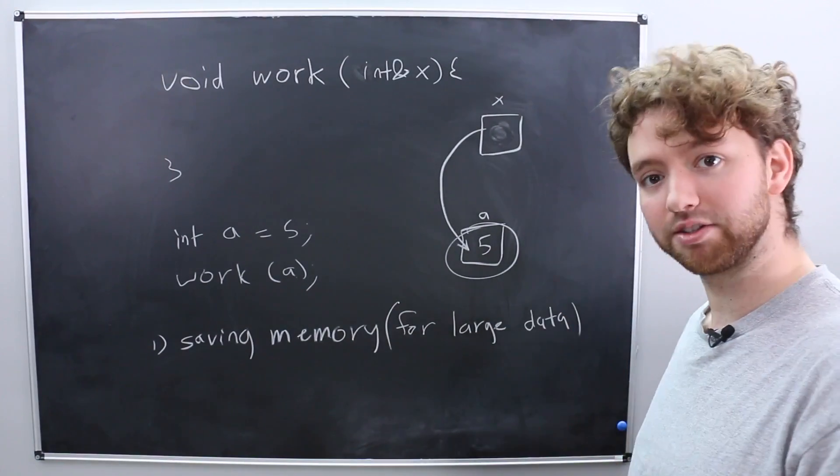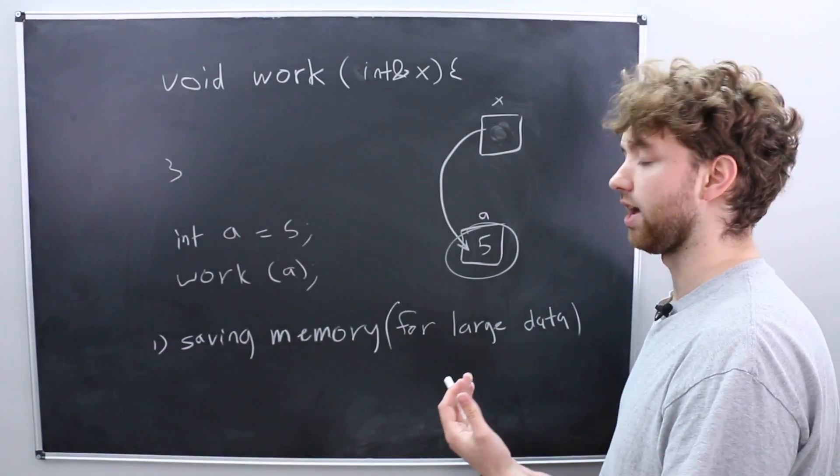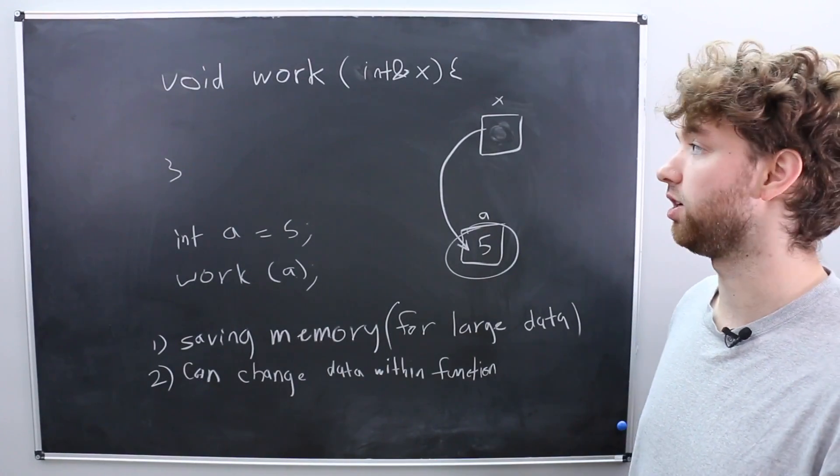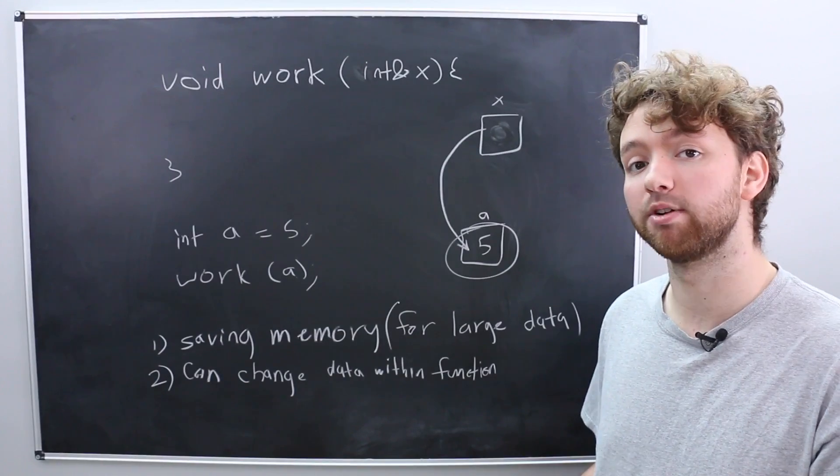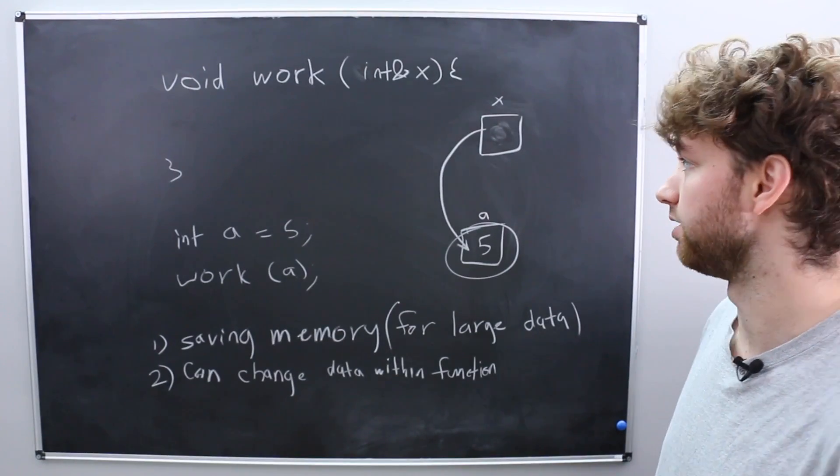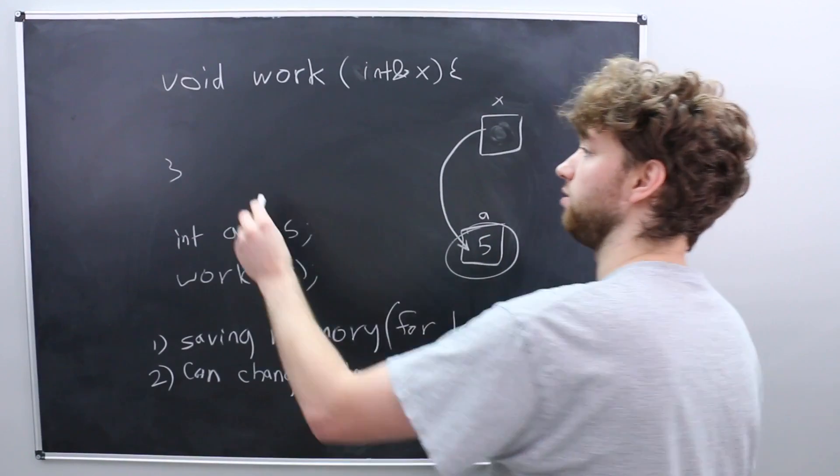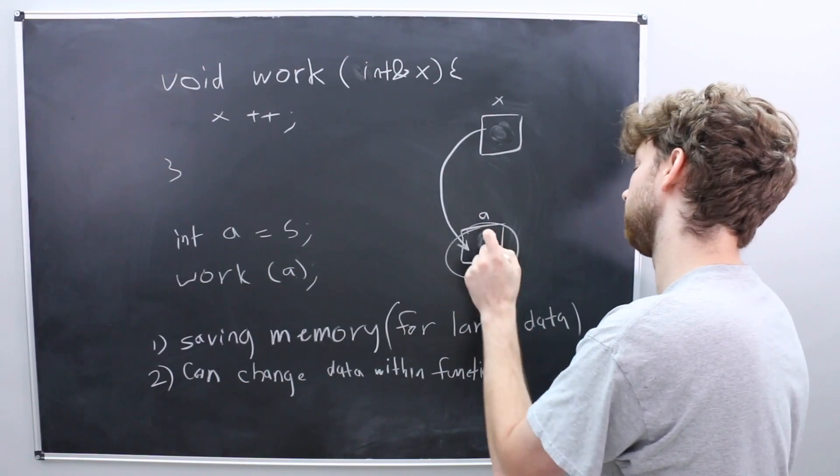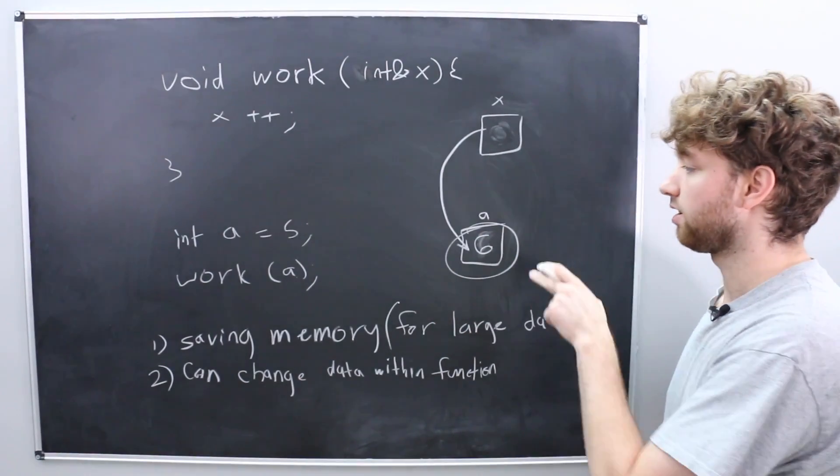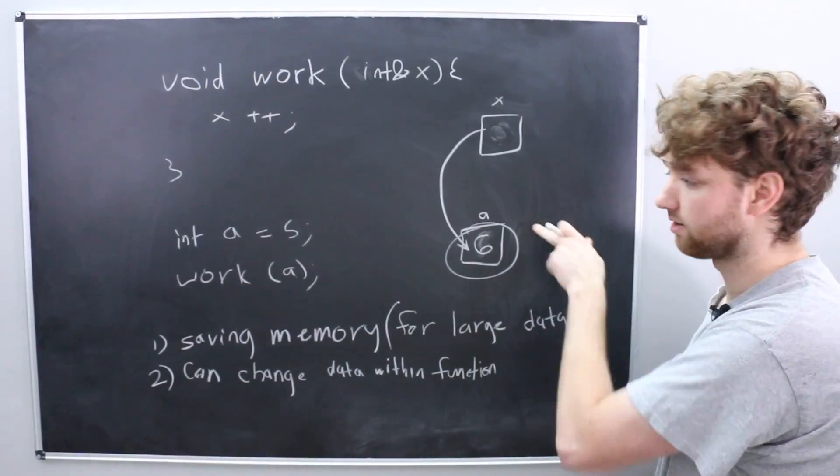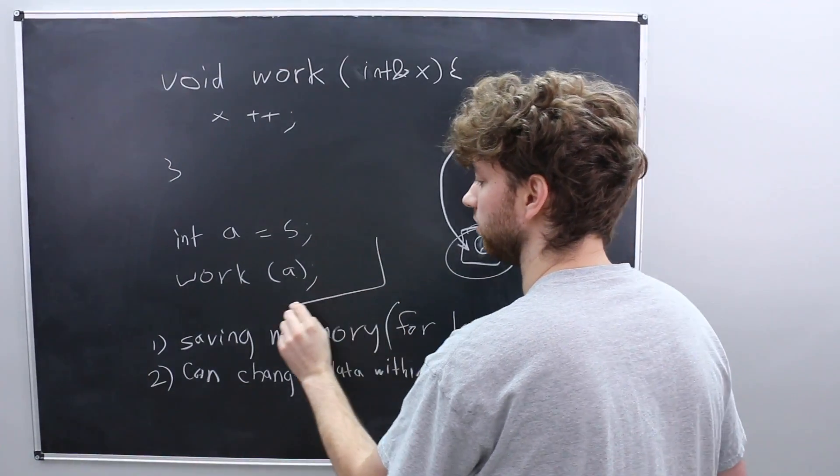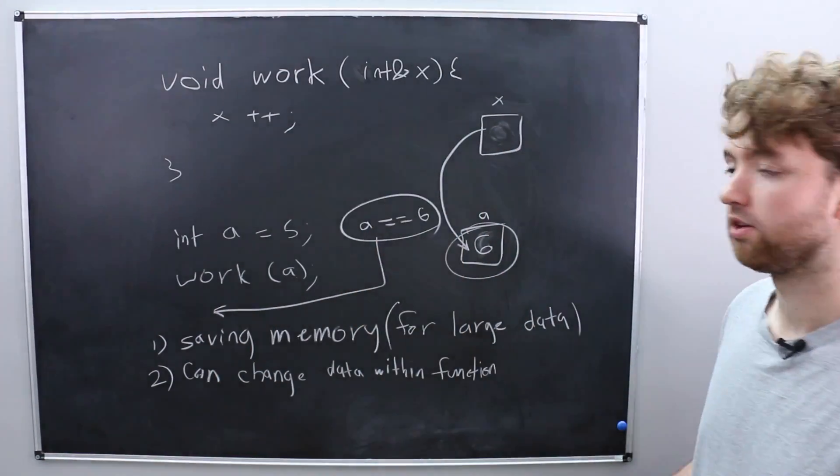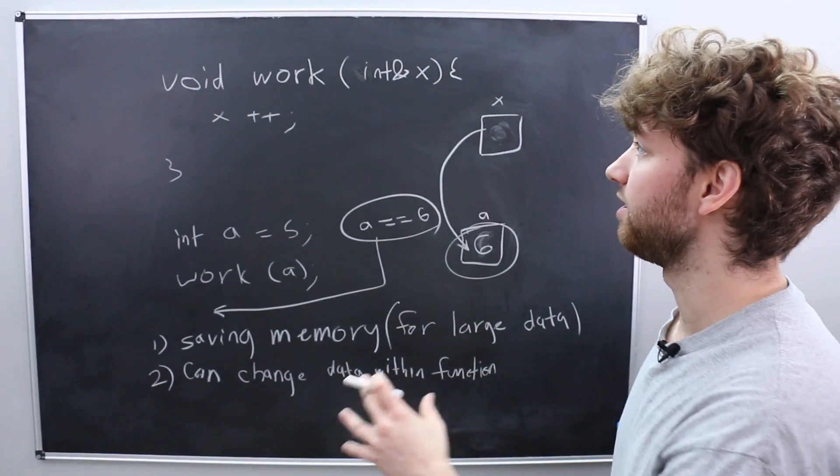The immediate consequence and it could be a pro or a con is that you can change the data within the function. So usually this is a good thing if you're creating a function and you want to be able to modify the parameter variable that was passed in you can use references. So in this situation we could do this x plus plus that's going to change this data right here to a six and notice that it changed it where a is. So that means down here in our code a is going to have the value six. So those changes persist beyond the function.